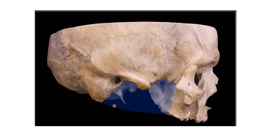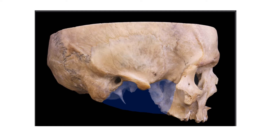To revise the boundaries: the posterior wall is formed by the styloid process of the temporal bone; the medial wall by the lateral surface of the lateral pterygoid plate; the anterior wall by the infratemporal surface of the maxilla; the roof by the infratemporal surface of the sphenoid bone; and the lateral wall by the ramus of the mandible.